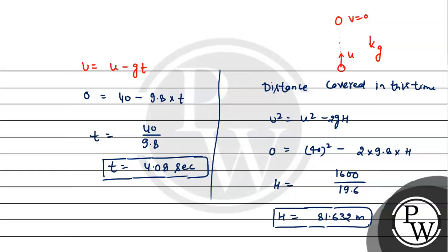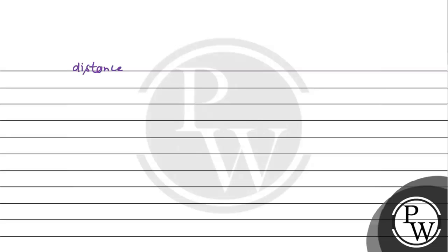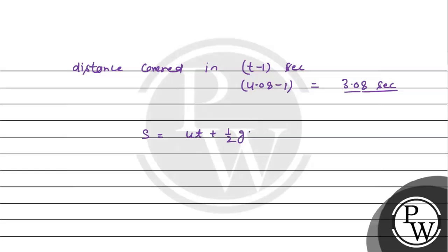The total time is 4.08 seconds and the height is 81.632 meters. Now we find the distance covered in t minus 1 seconds. Since t is 4.08, we compute 4.08 minus 1 equals 3.08 seconds. We apply s equals ut plus half gt squared for 3.08 seconds.